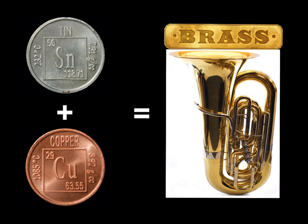I can also make a solution using two solids. I can take tin, a solid, and copper, a solid, melt both of them, mix the melted liquids, and that would make solid brass once it hardened. So I can take two solids and make a solution, which would make it very difficult to separate the tin from the copper.